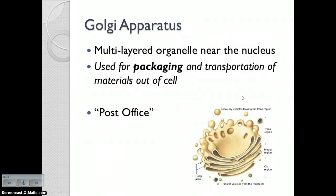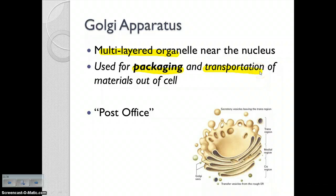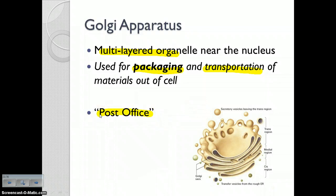The Golgi apparatus, or Golgi body, is a multi-layered organelle used for packaging and transportation. Any time you see the word "packaging," it's talking about the Golgi apparatus. This is our post office of the cell. It is found in plant and animal cells.